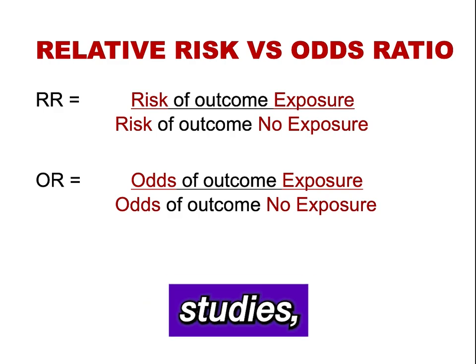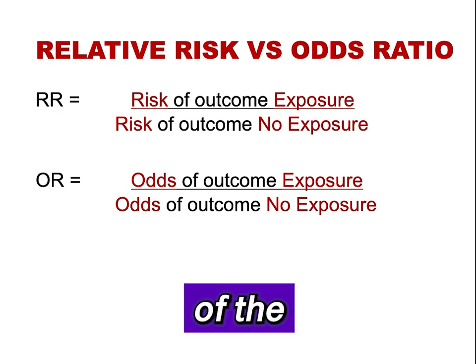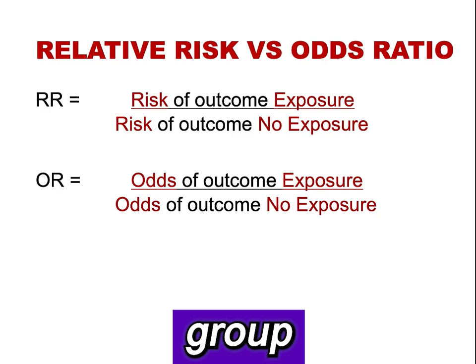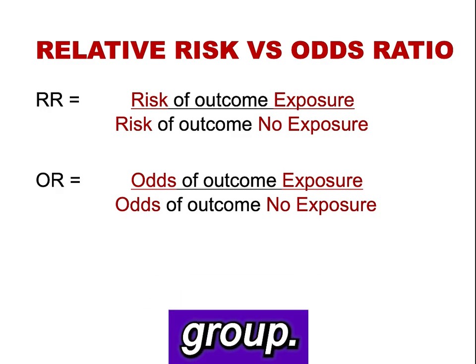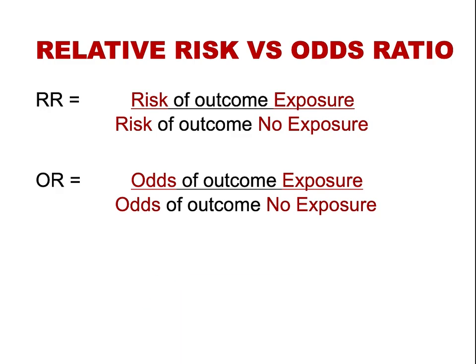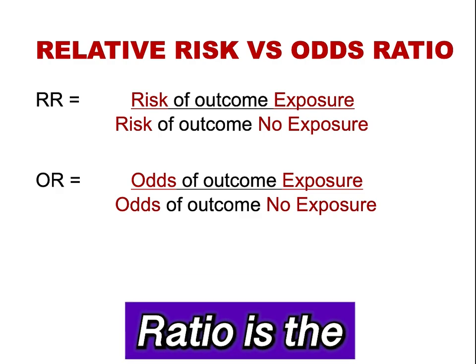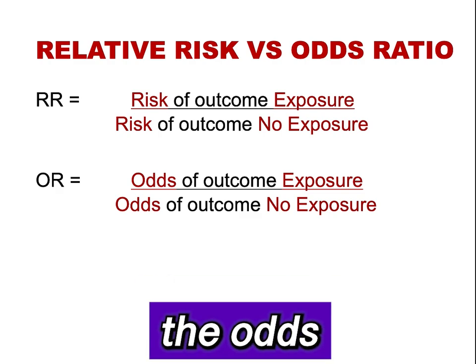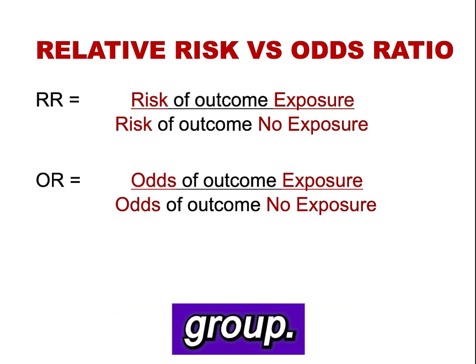In cohort studies, relative risk is defined by convention as the risk of the outcome in the exposure group divided by the risk of the outcome in the no-exposure group. The syntax is the same for an odds ratio: an odds ratio is the odds of the outcome in the exposure group divided by the odds of the outcome in the no-exposure group.